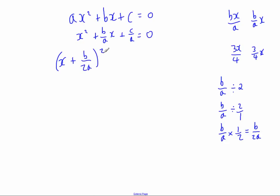I close the bracket and write squared, as you do for completing the square. Then I subtract this term squared — squaring a fraction means squaring the numerator and squaring the denominator. So b squared over 2a squared gives b squared over 4a squared, and I subtract that. Then I add the term on the end, plus c over a, and that equals zero. You may see parts of the quadratic formula starting to appear.